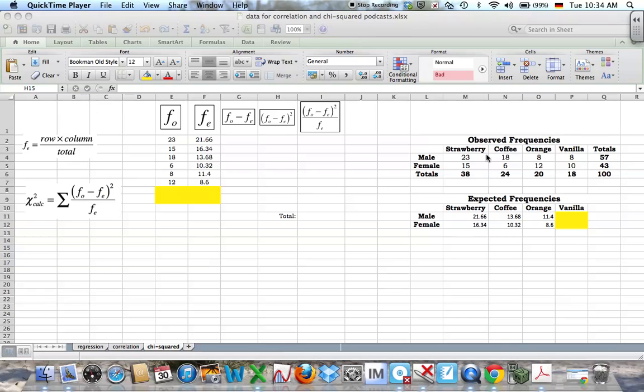Over here I have some observed frequencies with gender against favorite ice cream flavors. And then here I have the expected frequencies almost filled out.